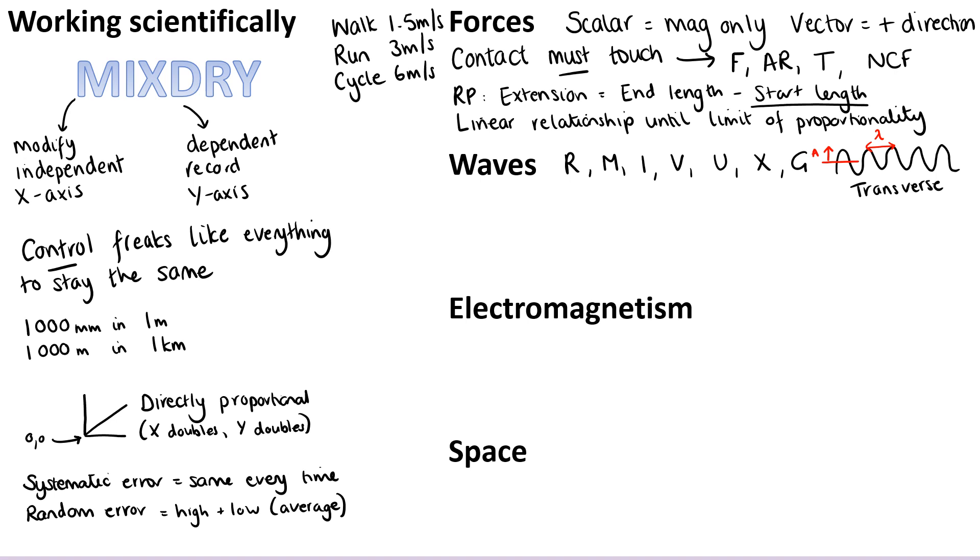Once you've got that electromagnetic spectrum, you might want to remind yourself that it's the long wavelength waves which are used for communication, and the short wavelength waves which are used for the medical applications. You might want to think about the required practical with the ripple tank, and how in order to increase accuracy and precision, you're going to measure 10 waves, and then divide the total length that you've measured by 10 when you're calculating the wavelength.